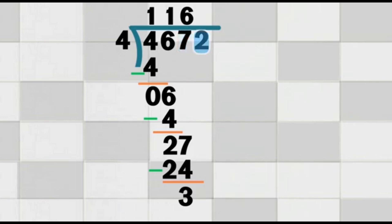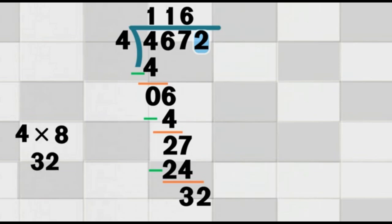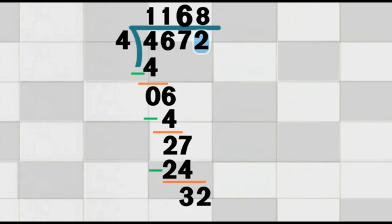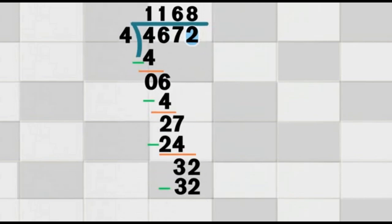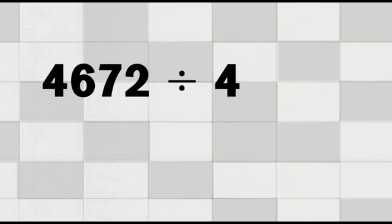Bring down the final digit. Now, bring down the last digit in 4,672, which is 2. Put the 2 next to the 3, and now we have 32. We ask: how many times does 4 go into 32? 4 times 8 equals 32 — that's perfect. So, we write 8 on top of the bracket, above the 2. Now our final answer on top is 1,168. Multiply: 8 times 4 equals 32. Subtract: 32 minus 32 equals 0. We are done. There are no digits left to bring down and no remainder. Final answer: 4,672 divided by 4 equals 1,168.